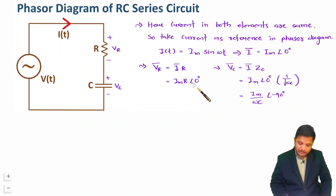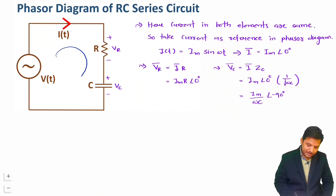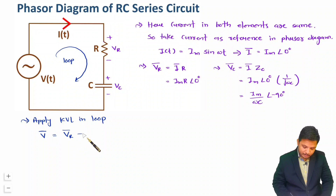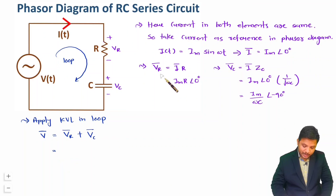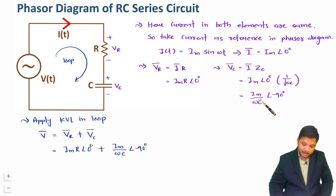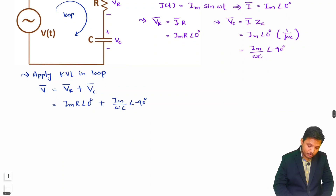So VR is at 0° phase and VC is at −90° phase. Applying KVL around the loop, the total voltage in phasor form is V̄ = V̄R + V̄C = Im·R ∠0° + (Im/ωC) ∠−90°. Now that we have voltage and current in phasor form, we can draw the phasor diagram.